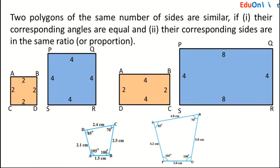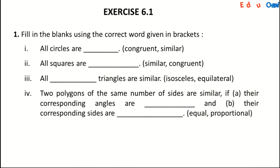Exercise 6.1 - Fill in the blanks: All circles are similar. All squares are similar. And all equilateral triangles are similar. Two polygons of the same number of sides are similar if their corresponding angles are equal and their corresponding sides are proportional.